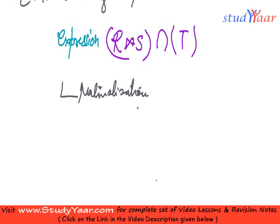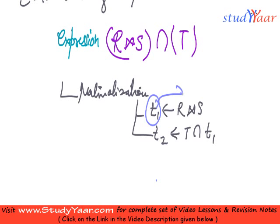First I am going to calculate T1, which would be R natural join S. I am going to store T1 into the disk. I am going to calculate then T2 which is T intersection T1. So that is how we use materialization. In materialization we store the intermediate result into the disk. We materialize the intermediate results. That is the concept of materialization.